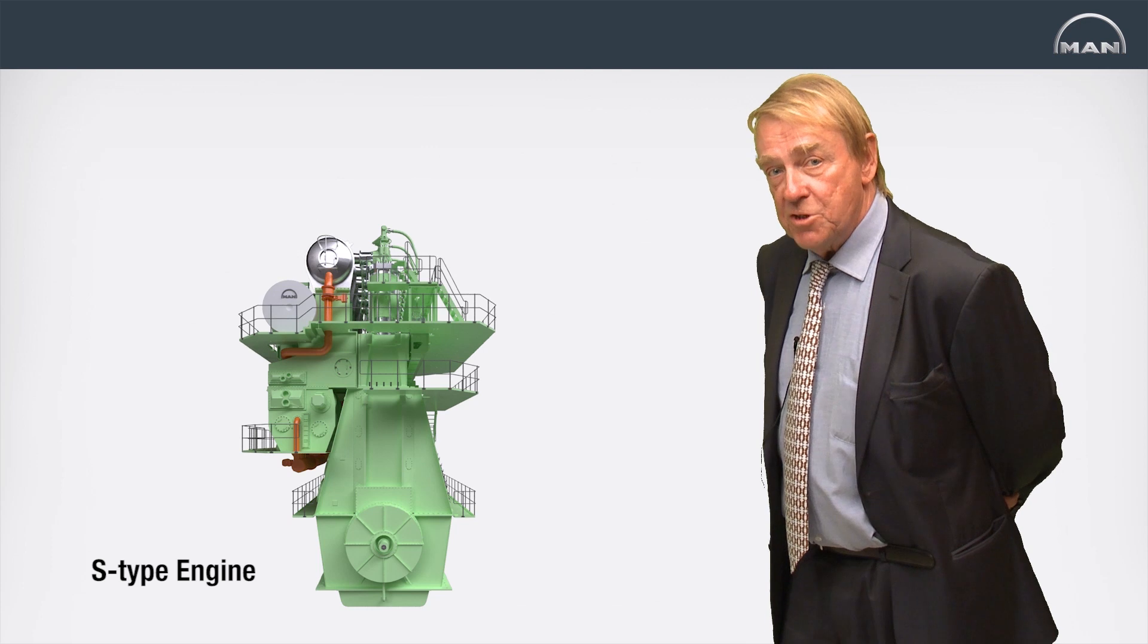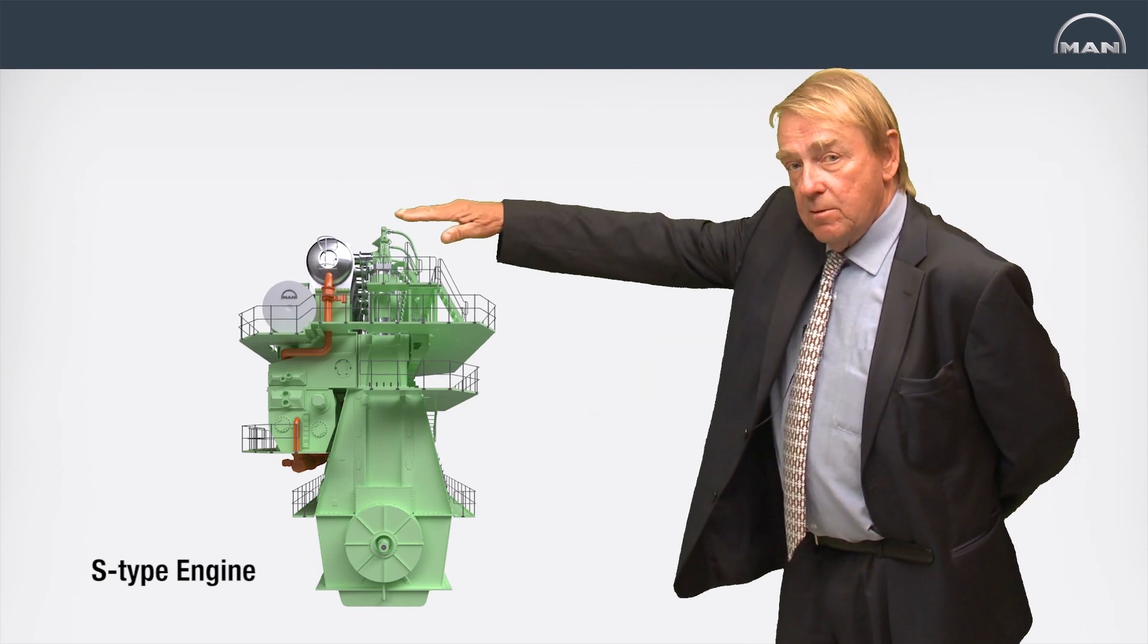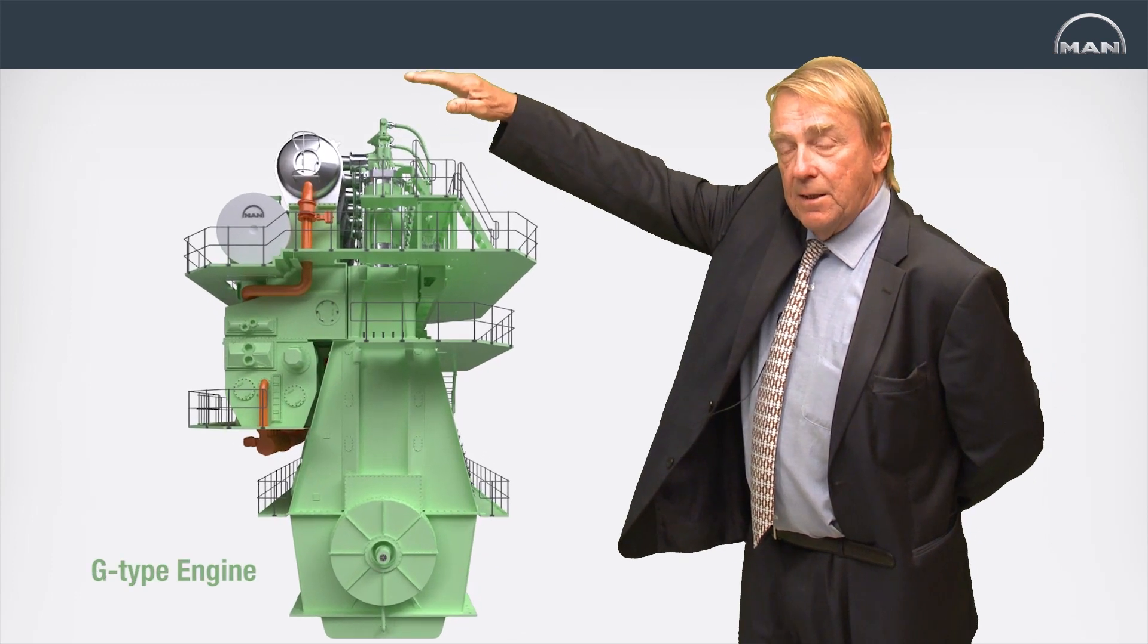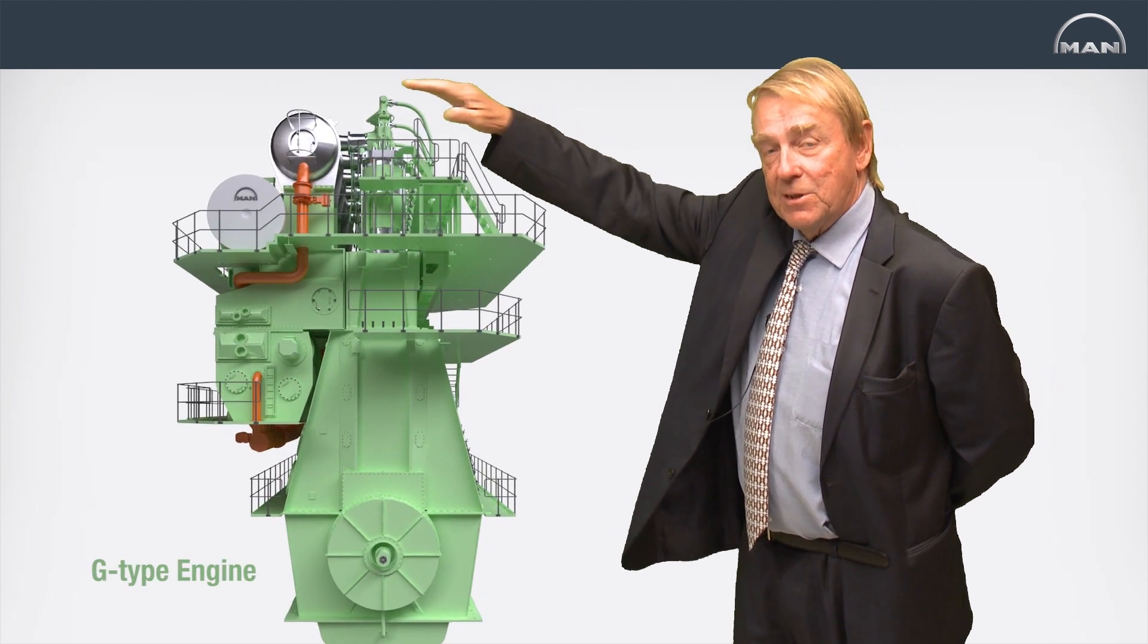Going from an S engine to a G engine means extending the stroke to bore ratio, thereby we get an engine with a longer stroke with a lower RPM. This gives better efficiency of the propeller.